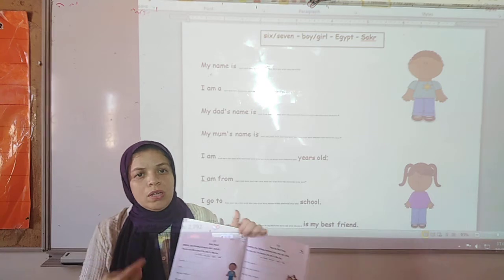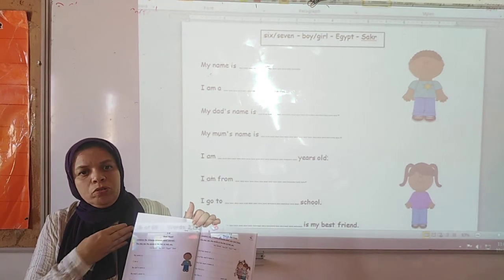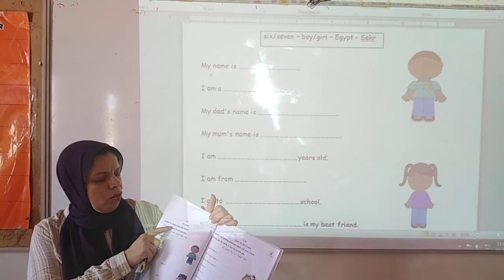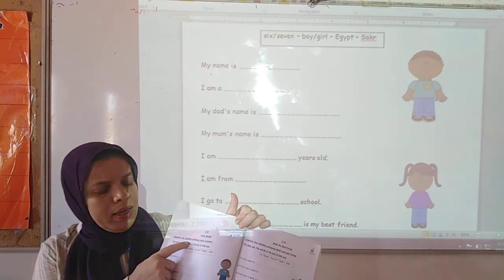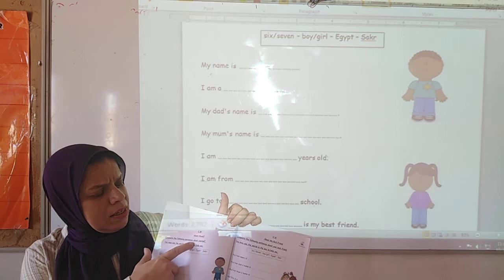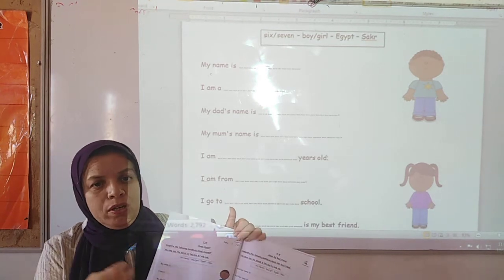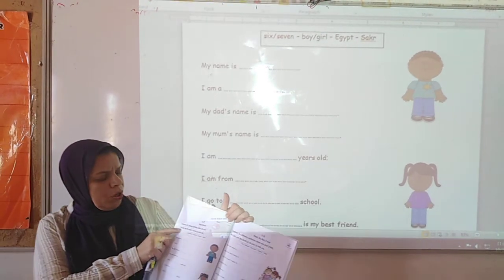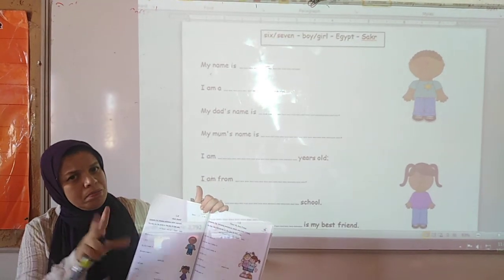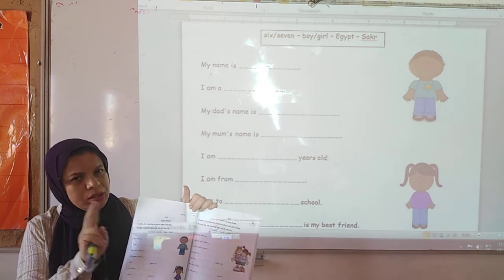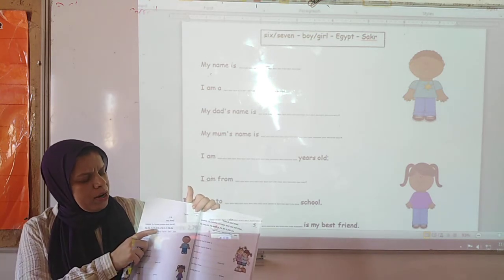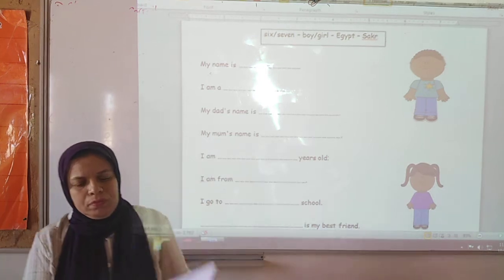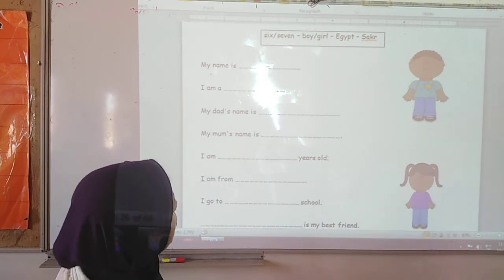So we are going to talk about you, yourself. Complete the following sentences about yourself. You may use the words in the box to help you. If you don't want to use these words, it's okay. These are the words in the box.